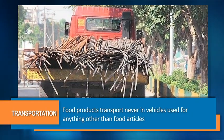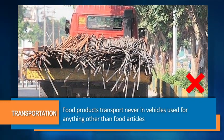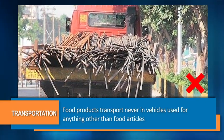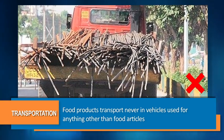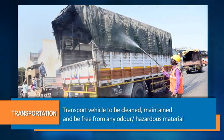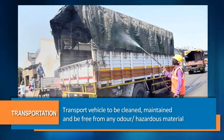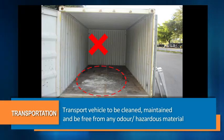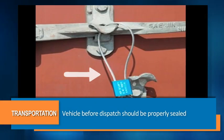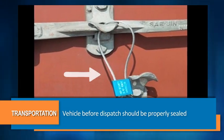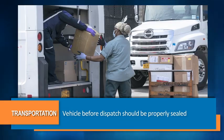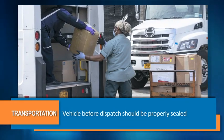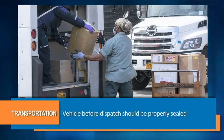Food products shall only be transported in vehicles which have never been used to transfer anything other than food articles. The transport vehicle should be cleaned, maintained, and be free from any odour and hazardous material. The vehicle before dispatch should be properly sealed to protect the final product such that it reaches the customer in an appropriate and safe condition.